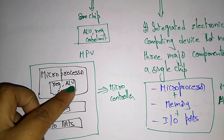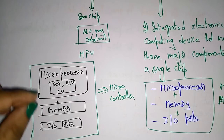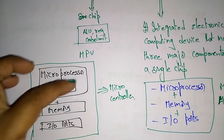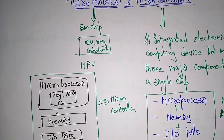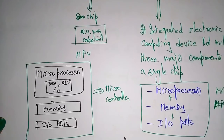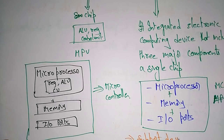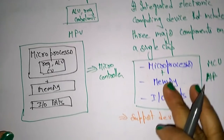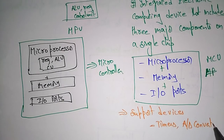To recap: a microprocessor consists of registers, ALU, and control unit. A microcontroller is a processor along with memory and input/output ports all integrated in a single chip. This microcontroller also has some supporting devices — those devices are timers, analog-to-digital converters, and serial input/output ports.